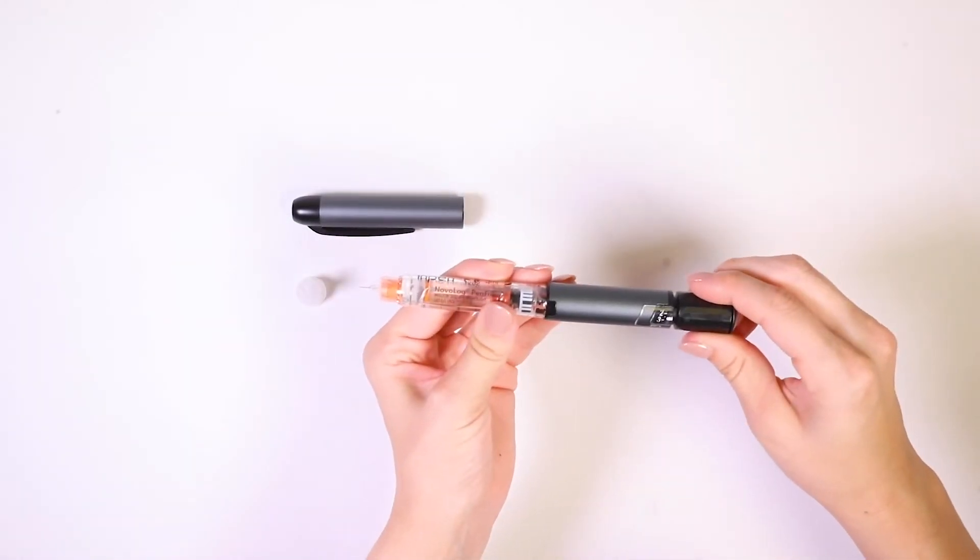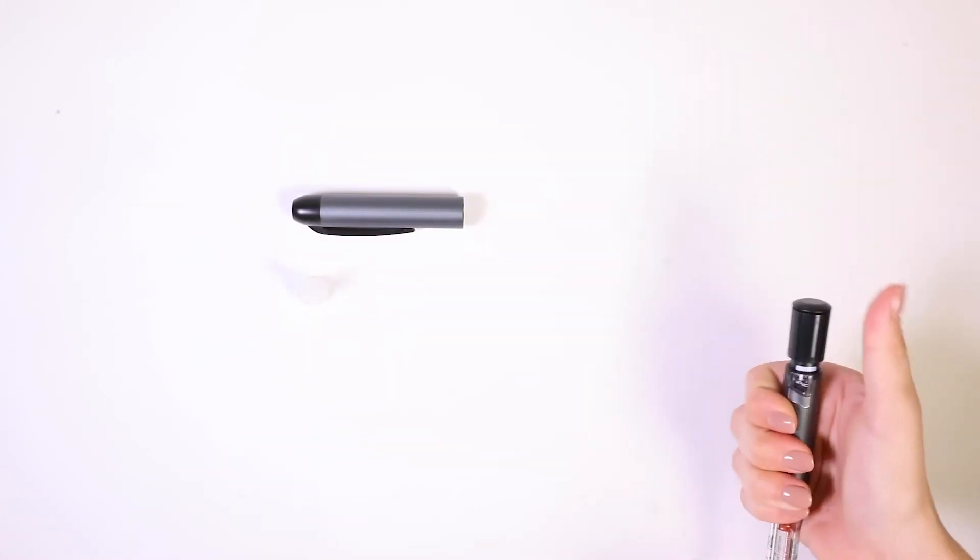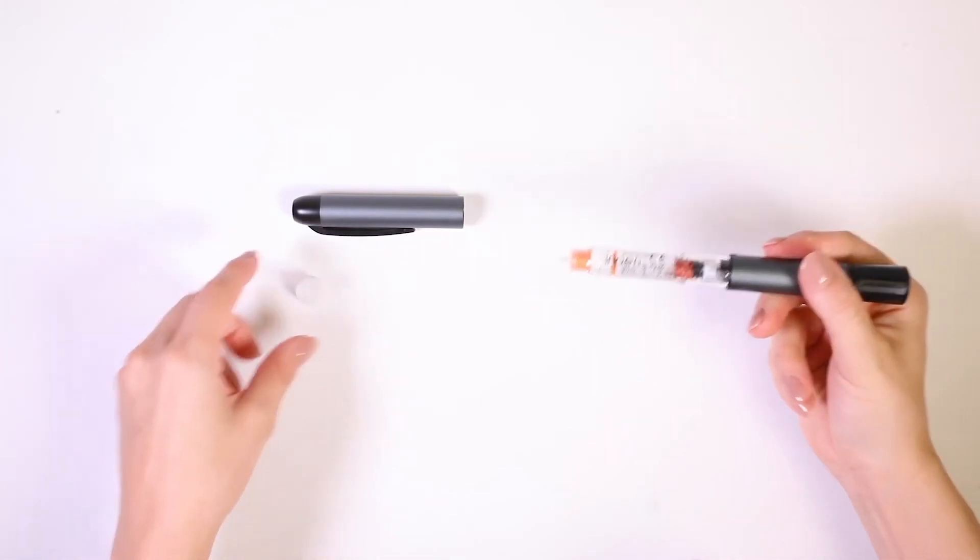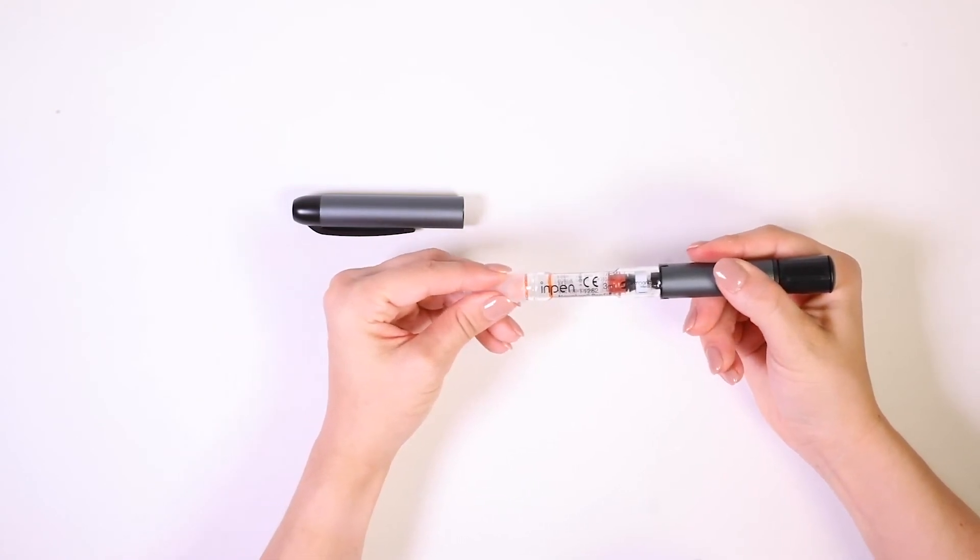To set your dose, turn the knob until the window shows your recommended dose. Insert the needle into your skin and press the button until the window shows zero. Wait for eight seconds, then remove the needle from your skin.